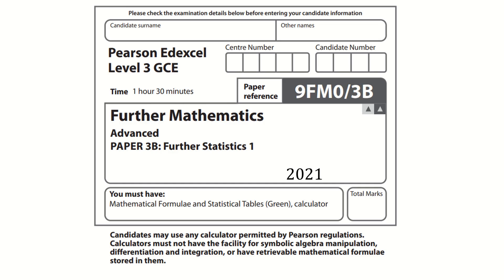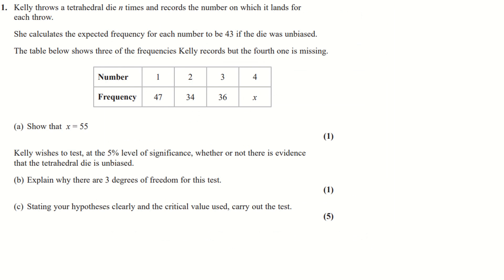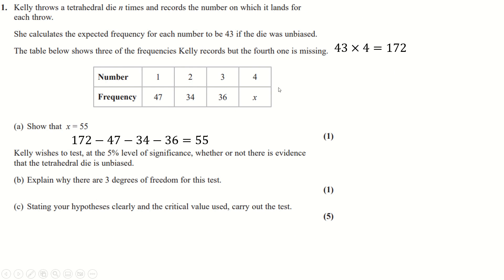This is Further Stats 1 from 2021. For the first question, the expected frequency for each outcome is 43. So 43 times 4 gives us the total number of rolls. Taking away the three known values, we get 55, which is what X needs to be.